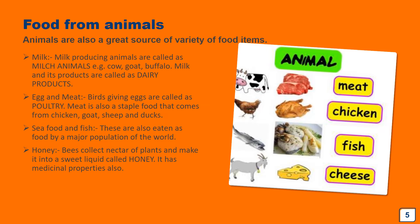Now we will discuss the food which we get from animals. Animals are also a great source of variety of food items. The non-vegetarian people get many food items from animals, but vegetarian people also get things from animals — milk and honey. These are things we get from animals and everybody consumes them a lot. The milk-producing animals like cow, buffalo, and goat are called milk animals.